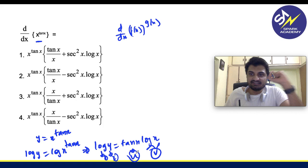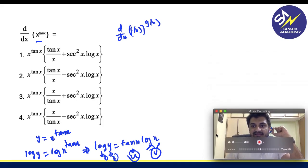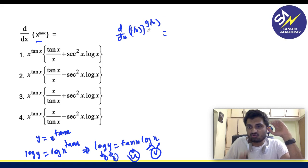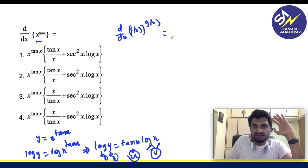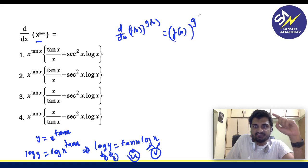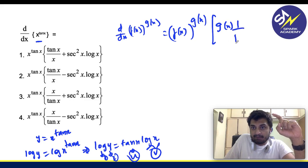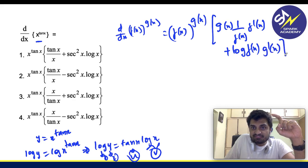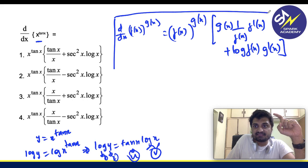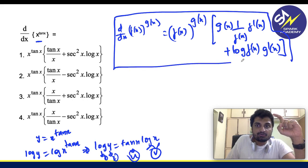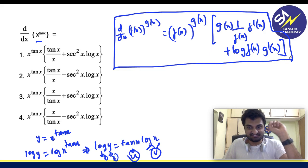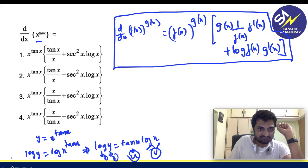What if I tell you there is a trick to solve this? The trick is d by dx of f of x power g of x can be written as the function as it is which is f of x power g of x, the power term g of x, one by the base term which is f of x into f dash of x plus log f of x into g dash of x. If you remember and use this simple trick questions like this will become one step questions.